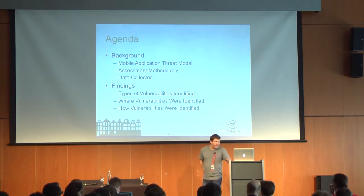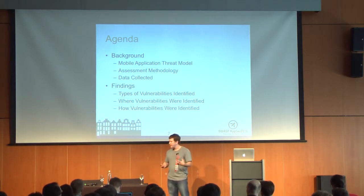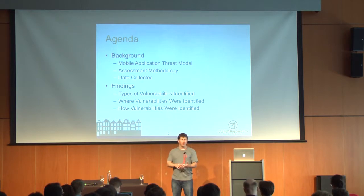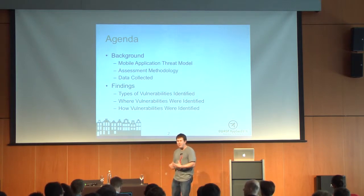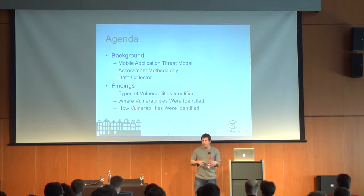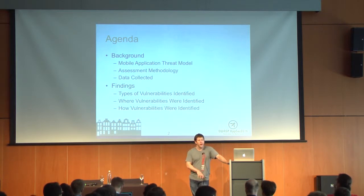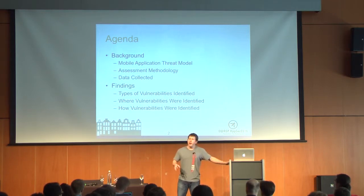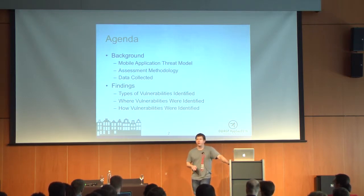We'll also look at where these vulnerabilities were identified. If you think of mobile applications, unless you're building Fort Knox applications — which we're rarely asked to do security assessments of — we're talking about banking and insurance type applications. It's not just about the code that runs on the device. You're looking at a system of applications: code running on the device, enterprise web services supporting the mobile application, and potentially third-party web services. We'll look at where we tend to find the most and the most serious vulnerabilities during these assessments.